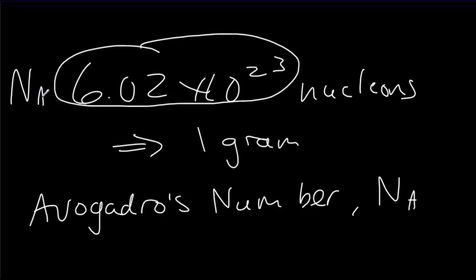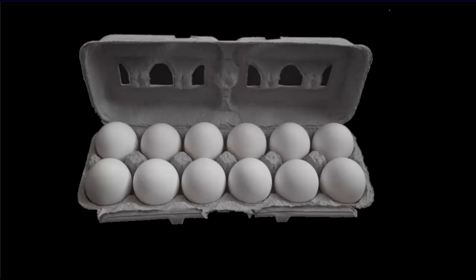So, Na is equal to 6.02 times 10 to the 23rd. Well, this Avogadro's number is just a number in the same way that, say, a dozen is a number. A dozen is the number 12.